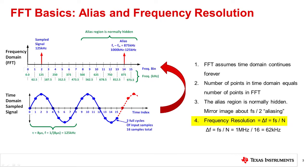Fourth, all FFTs have a frequency resolution that is equal to the sampling frequency divided by the number of samples. The frequency resolution is the minimum change in frequency that the FFT can detect. In this example, the frequency resolution is 1 megahertz divided by 16, or 62 kilohertz. Thus, the measured frequency bins step in increments of 62 kilohertz for this example.